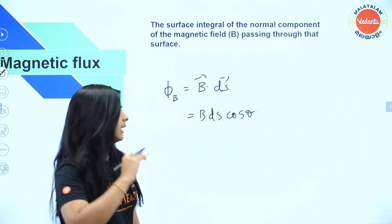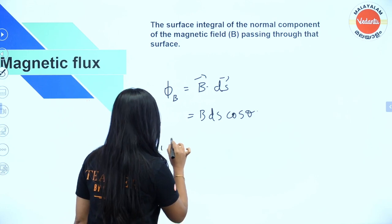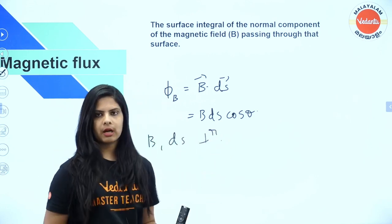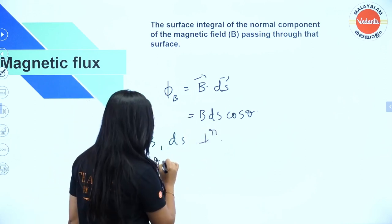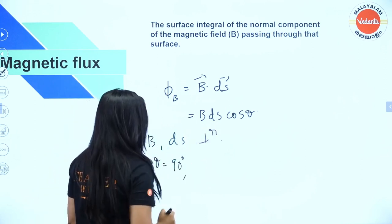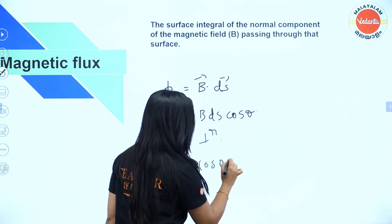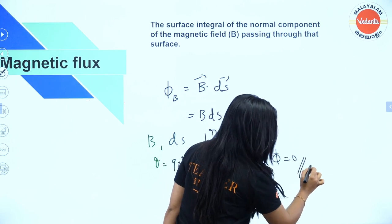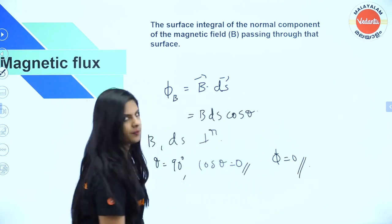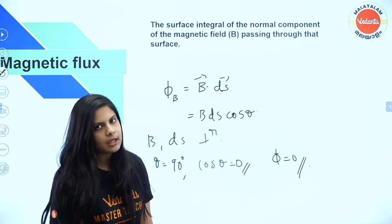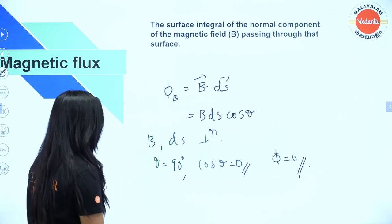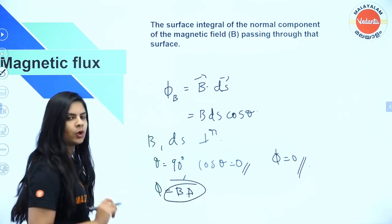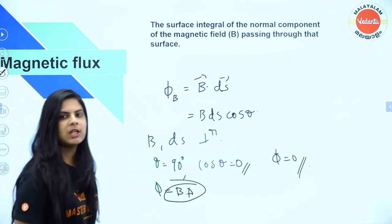When B and dS are perpendicular, the angle θ is 90 degrees, which means cosθ = 0, so the flux φ will be equal to 0. When they are parallel, φ will be equal to BA — that is field times area.